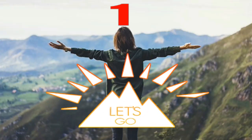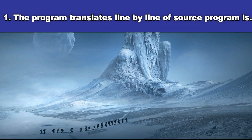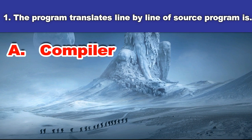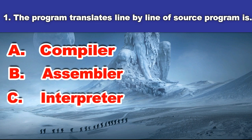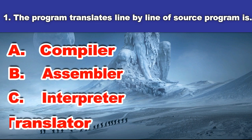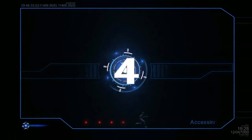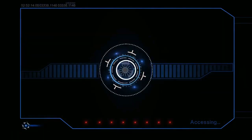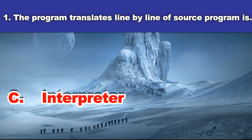First question: The program that translates line by line of a source program is — A. Compiler, B. Assembler, C. Interpreter, D. Translator. And the answer is: Interpreter.